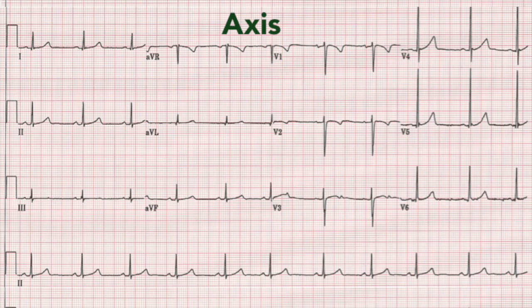Axis. ECG axis corresponds to the direction the heart is sitting within the thorax. Deviations from normal could indicate hypertrophy of the chambers.